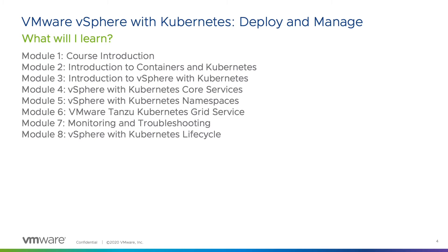Module 5 will take us through the vSphere with Kubernetes namespaces. Module 6 will introduce the VMware Tanzu Kubernetes Grid Service and show us how this service can be used by developers to self-provision OCI-compliant Kubernetes clusters. Module 7 will look at monitoring and troubleshooting from the vSphere administrator's perspective. And the last module, Module 8, will deal with the vSphere with Kubernetes lifecycle, as it does slightly differ from the traditional vSphere lifecycle.